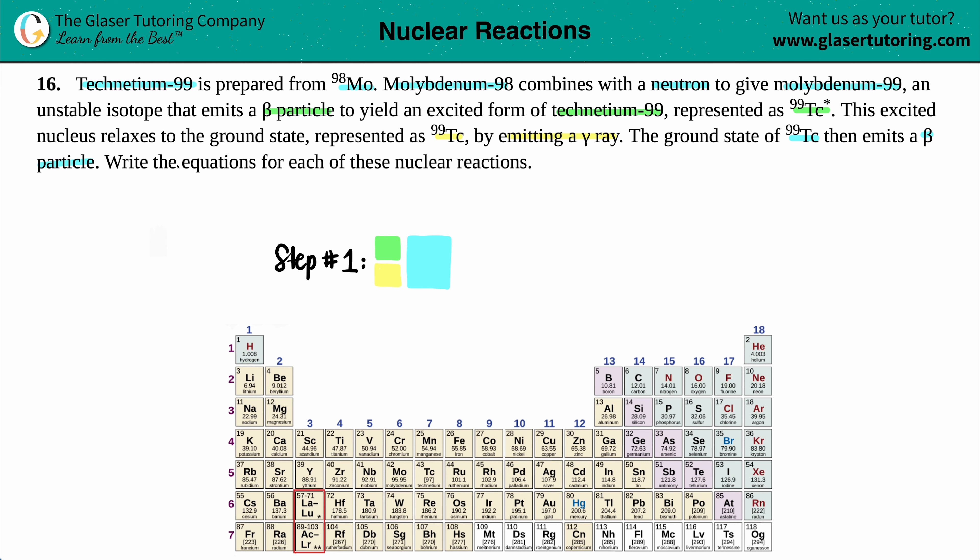So, let's give it a shot. The first sentence tells us the general idea of where we're supposed to be going. At the end of the day, we have to make technetium-99, and we have to prepare it from molybdenum-98. But now, here comes the first part. The first part says that we take that molybdenum-98, and we combine it with a neutron to give molybdenum-99. So, molybdenum, we have to find that element on the periodic table. Can you spot it? I spot it. It's right here.